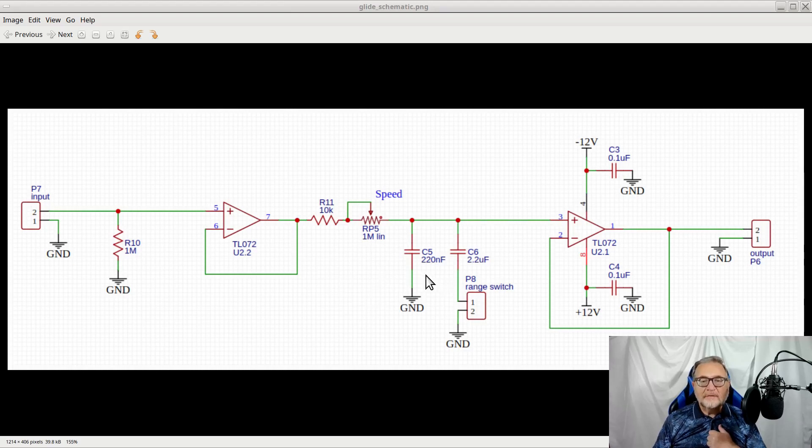With the switch open, we can obtain a glide effect that goes from about 2.2 ms up to 222 ms. With the closed switch, we can obtain a glide effect that goes from about 24 ms up to 2.44 seconds, thanks to the extra capacitor C6.